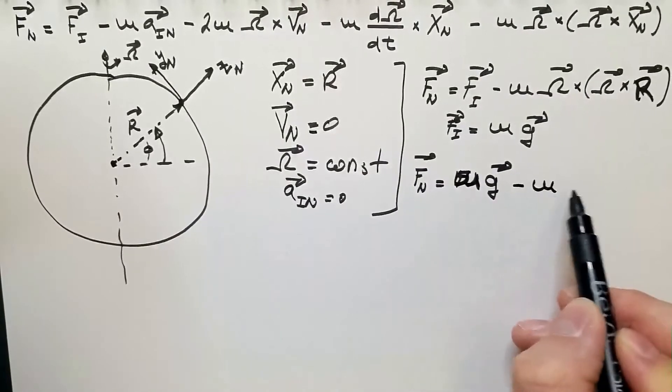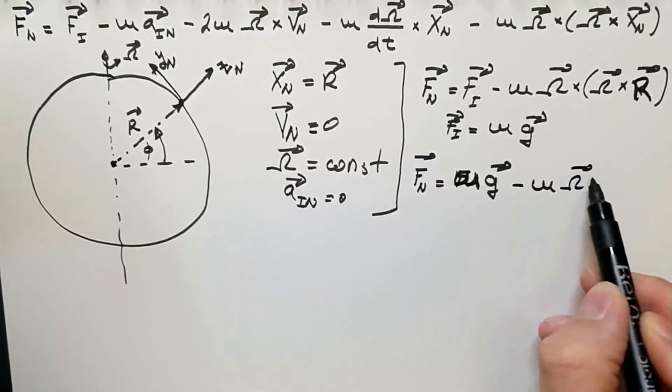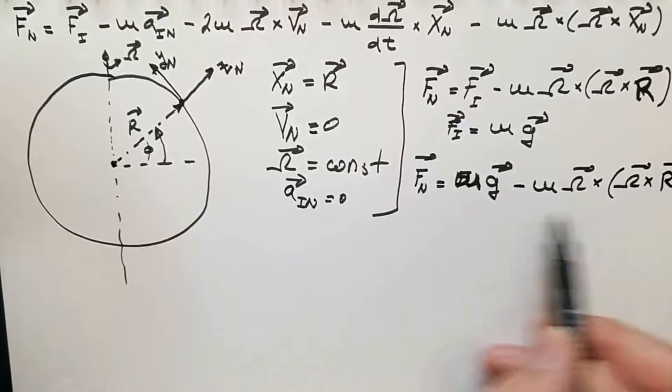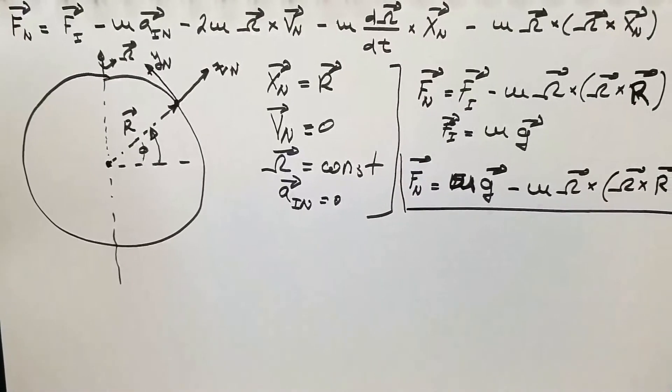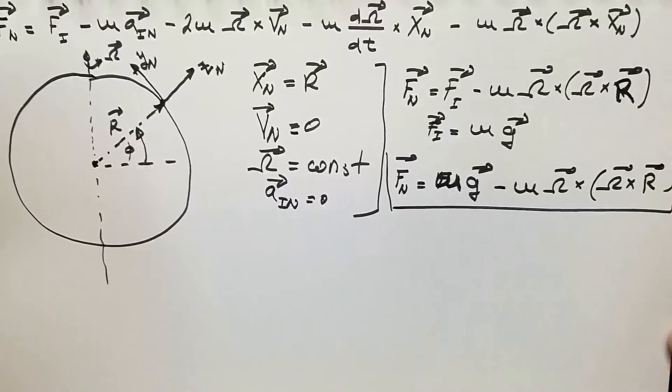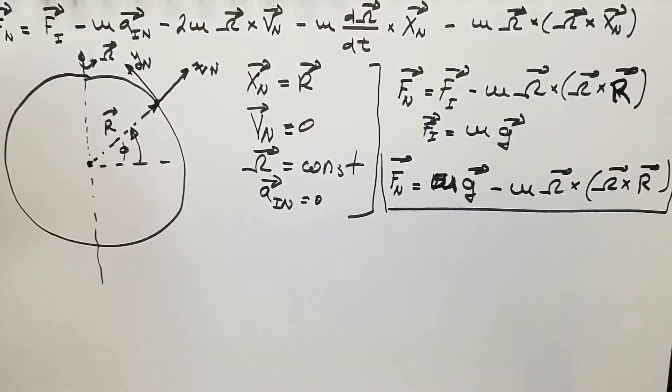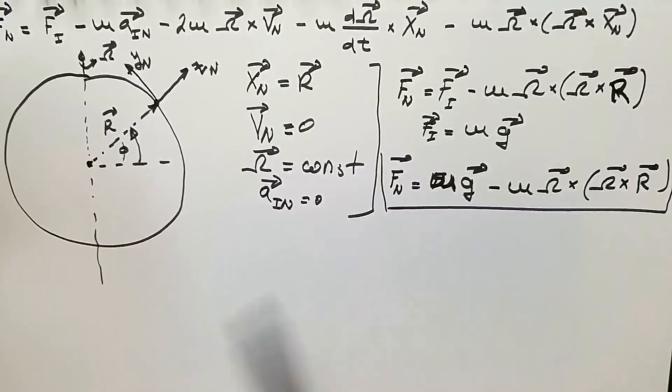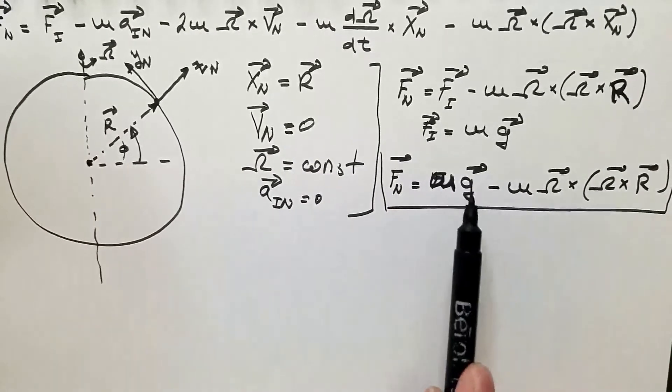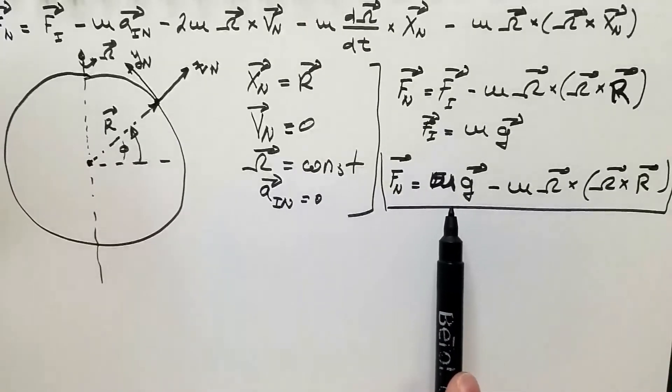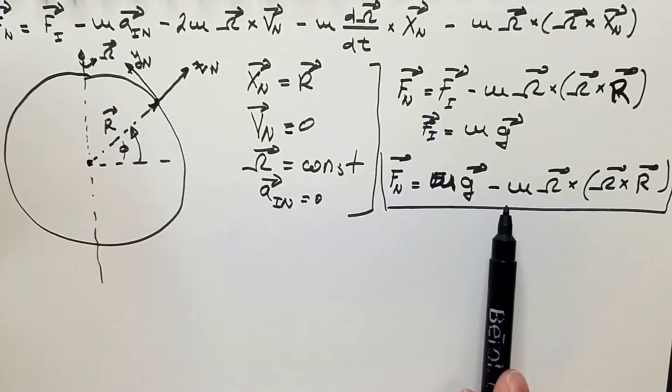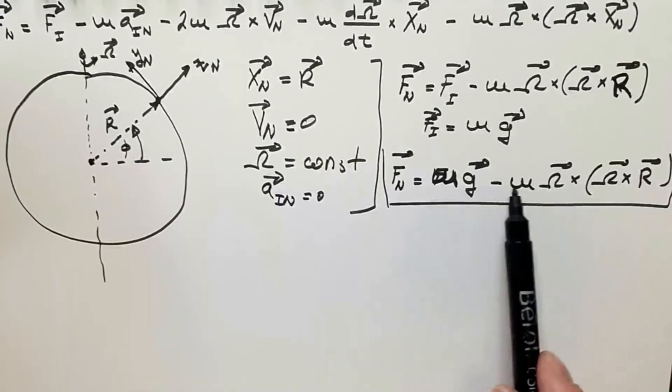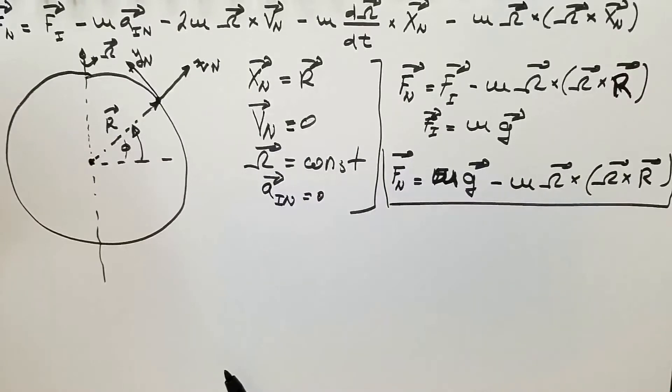Then the above expression becomes F_n is equal Mg minus M omega cross product omega cross R. And this expression over here is also known as the vector form of the equation for apparent or fictitious gravity, namely the real gravity that we talked about in one of my previous videos is reduced for the value of centrifugal force. If we remove masses, then these become accelerations, of course.